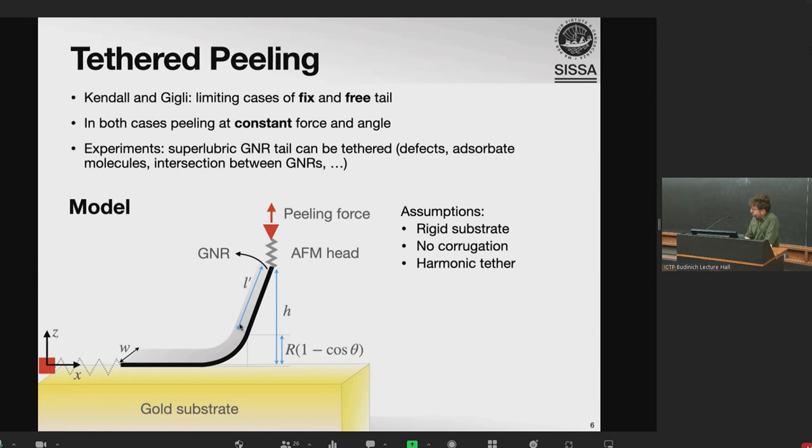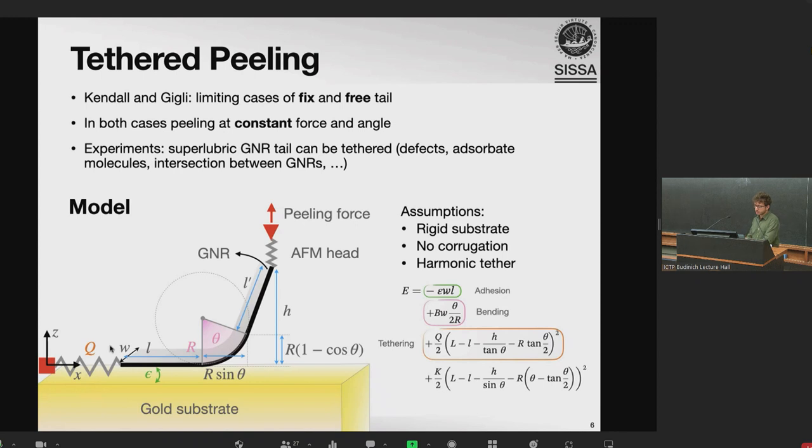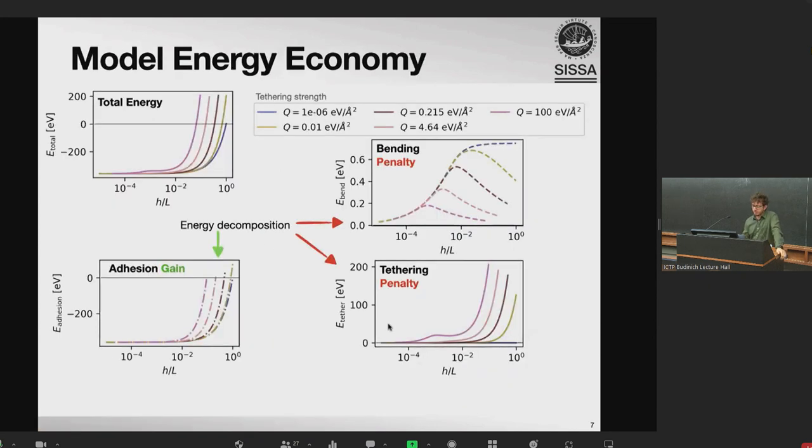So we can model the peeling of this nanoribbon like this. We have our graphene of width W absorbed on the gold surface. And we assume that the substrate is rigid, so there is no corrugation, there is only adhesion energy. And we start with a harmonic tether, because it's not clear what the tether would actually be in the experiments. So we can write down the energy, which is divided in an adhesive part, a bending part which describes the cost of building a bending interface, the tethering of the extension of the tail, and the intrinsic elasticity of the nanoribbon. So once we have the equation for the energy, we can start by solving it numerically, and see the evolution of the energy as we proceed with the peeling. So here we have the total energy of the system as a function of the peeling height, normalized by the length of the nanoribbon. And we explore the behavior at different values of the tethering strength, because we would like to see what's the difference with this sort of unknown parameter of the model, since it's not given by the current experiments.